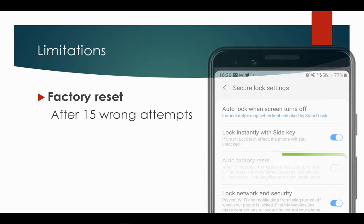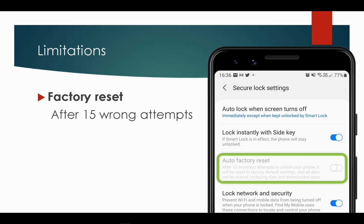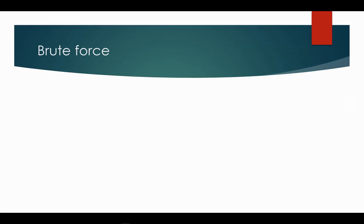The second limitation is factory reset. This is not set by default — it needs to be set by the user in settings. It means that after 15 wrong attempts the device will erase all data. So there are two limitations: timeout and factory reset.